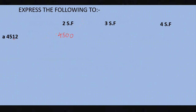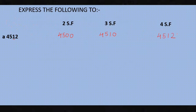For three significant figures of 4,512, the first three significant digits are 4, 5, and 1. Look at the next digit, which is 2 — less than five, so no change. The answer is 4,510. For four significant figures, all four digits are significant, so the answer is 4,512 itself.